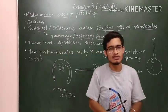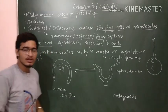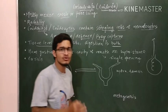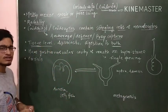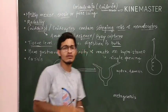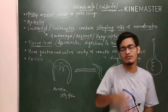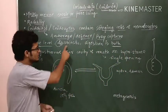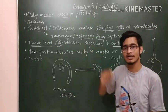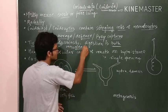Coelenterata show tissue level organization. The only animal phylum with cellular level of organization was Porifera. After that, all higher phyla have tissue, organ, or organ-system level organization. Before Platyhelminthes, all animals have two germ layers - ectoderm and endoderm - so they are diploblastic. Additionally, there is an undifferentiated cell layer known as mesoglia present in place of mesoderm.